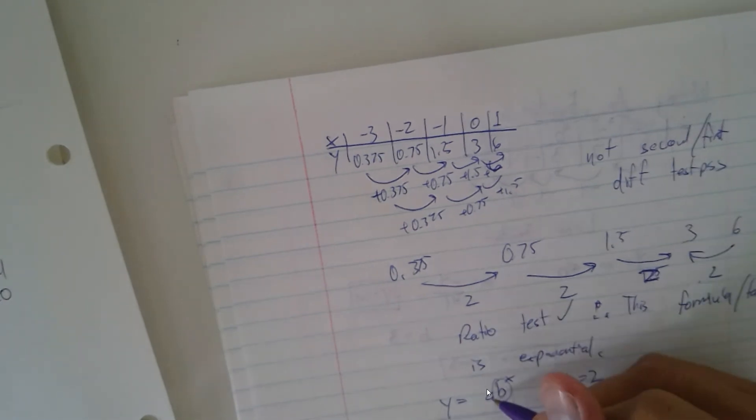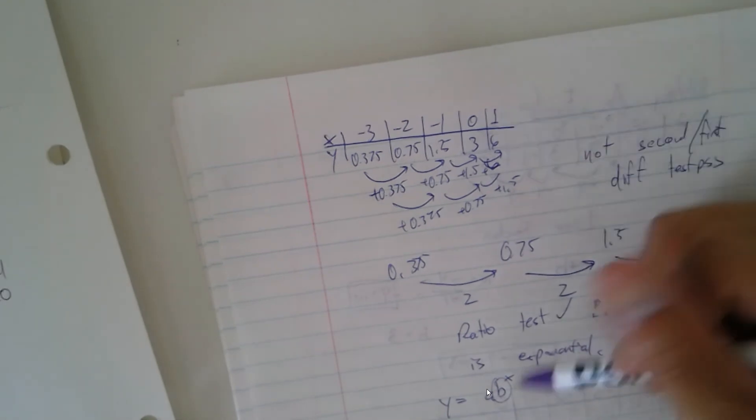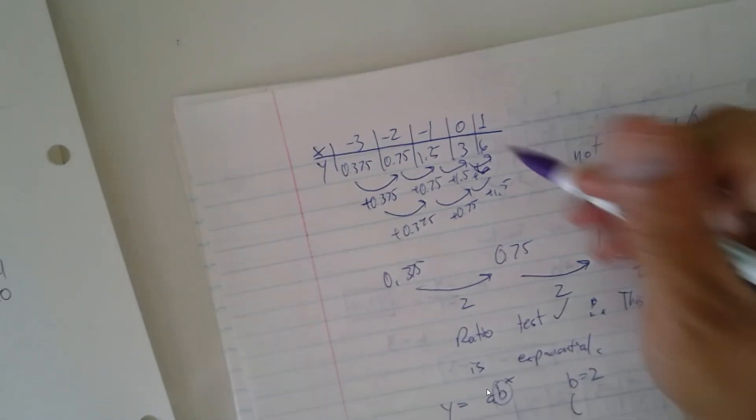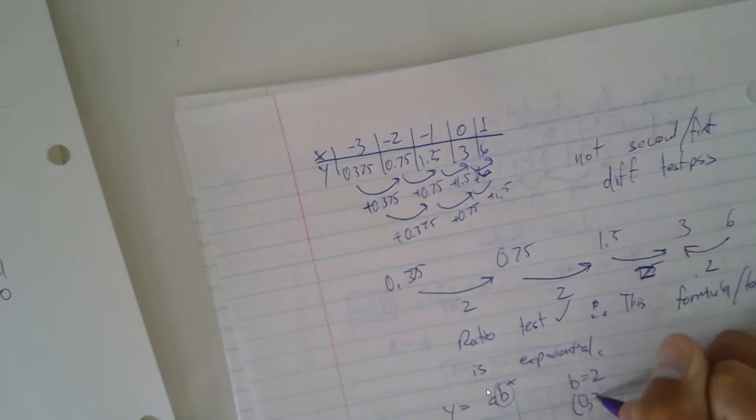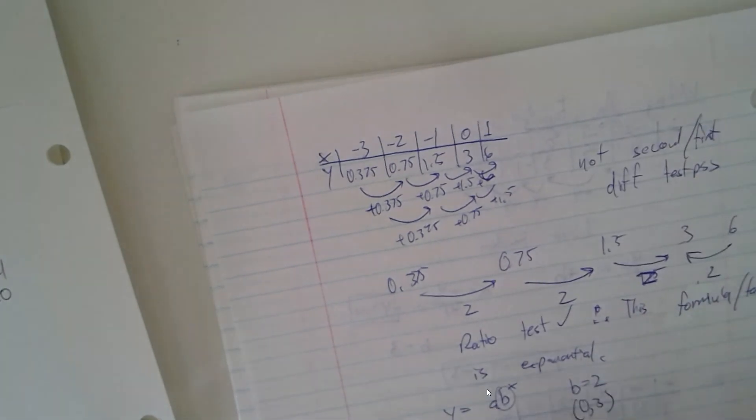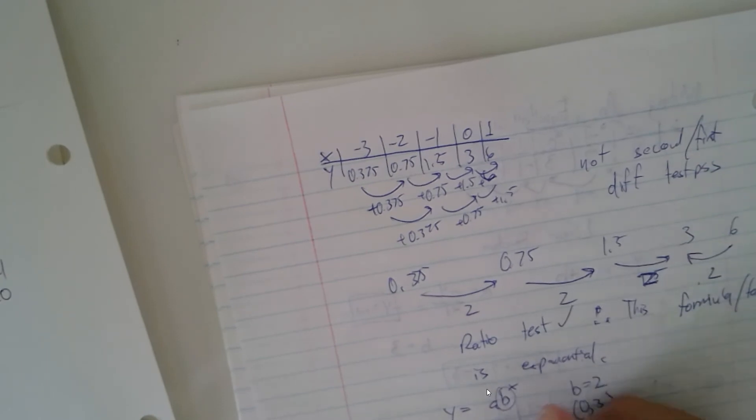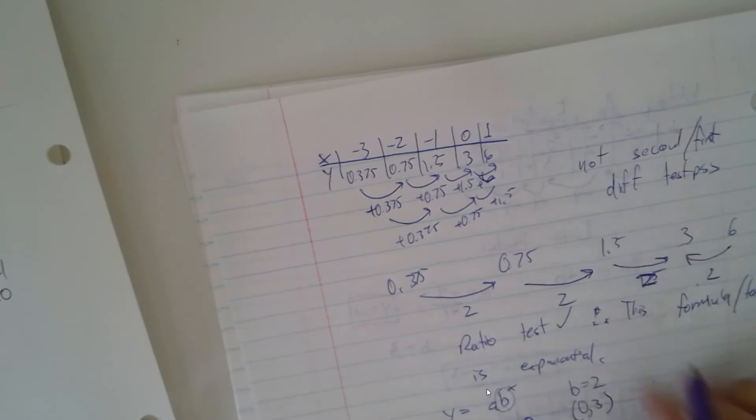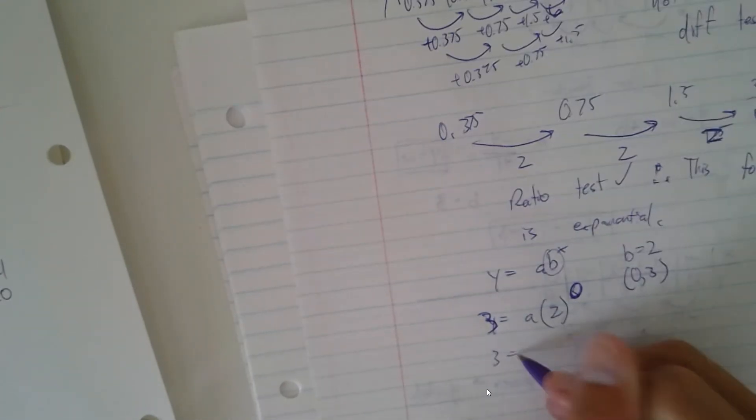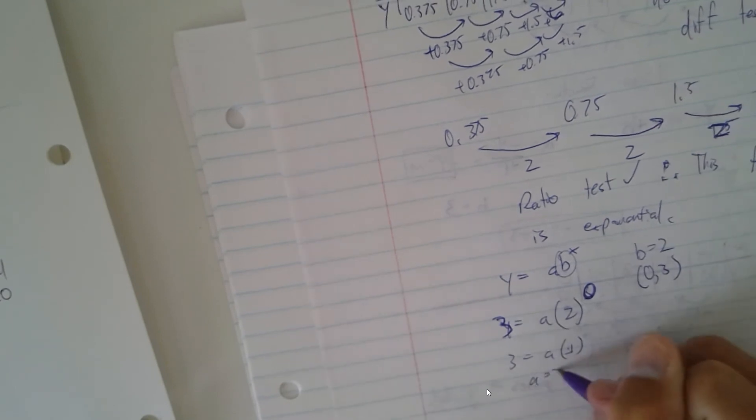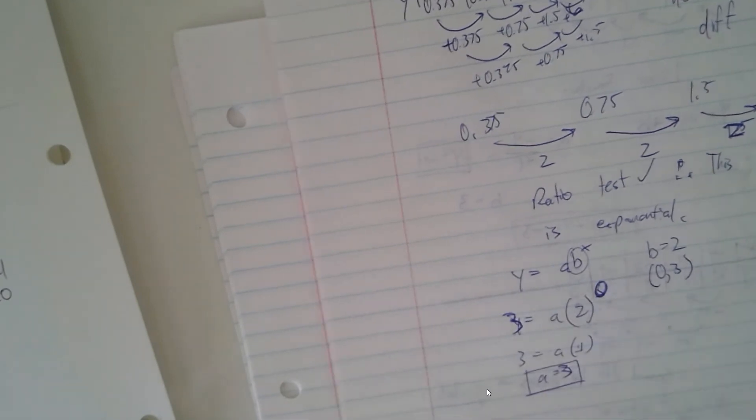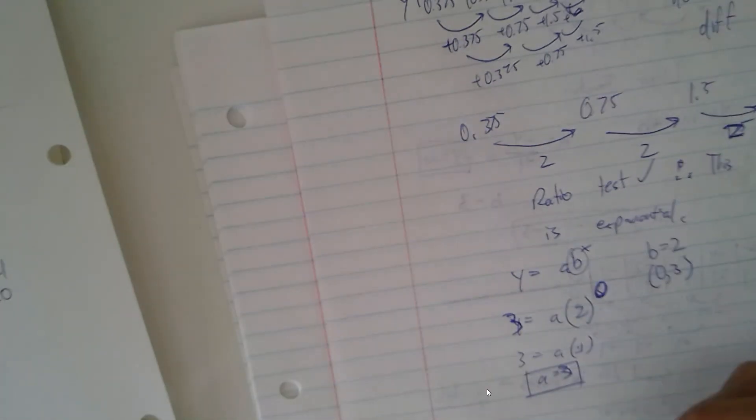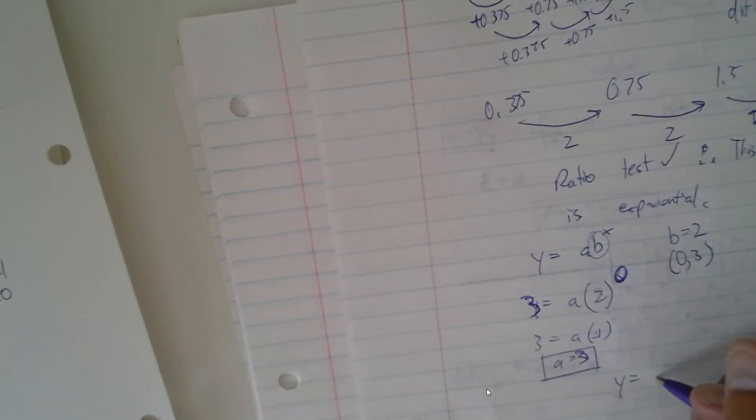And then to find out a, all you have to do is pick any point up here and plug it back into here for the xy. So any xy coordinate would work. I'm going to put 0, 3. So you're going to have y, which is basically 3 now, equals a times b, which is 2, to the 0 power. And that's going to be 3 equals a times 1. So a equals 3. Therefore your equation is y equals 3 times 2 to the x power.